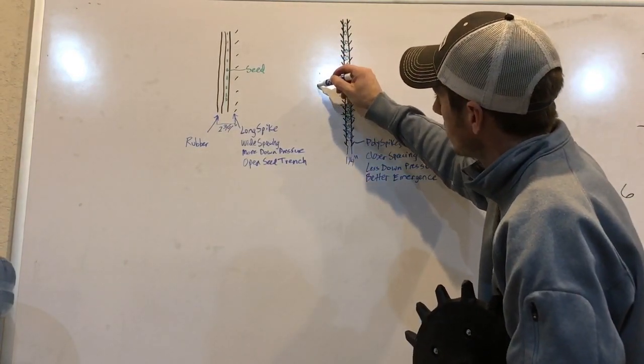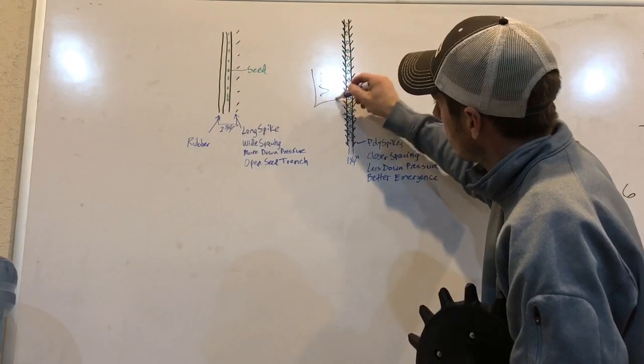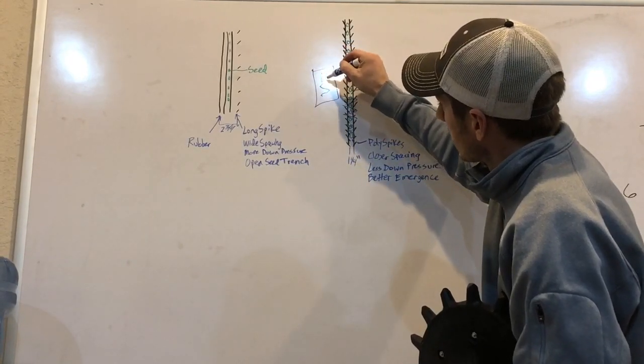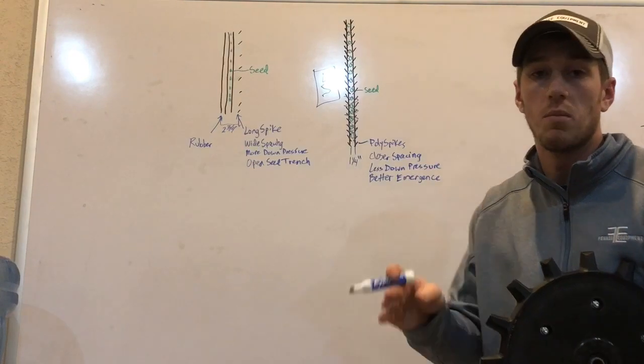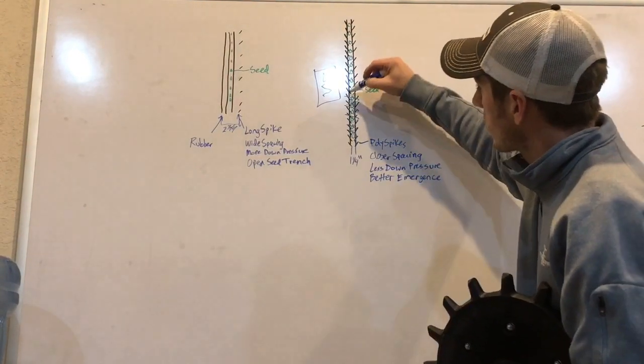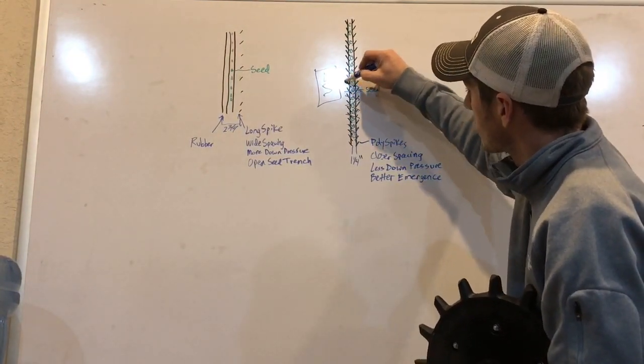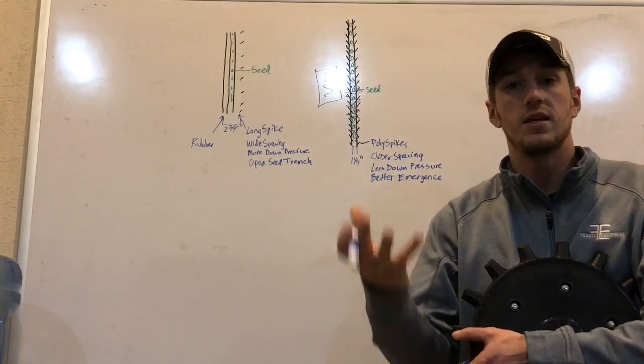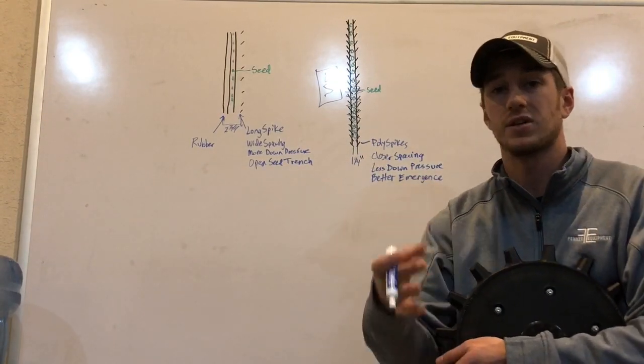If you've got your notches on your closing wheel arm, you want to be in that first notch and no more. The reason is, if you start putting down too much down pressure, you're going to hinder that seed from coming back up through that, especially in wet conditions.